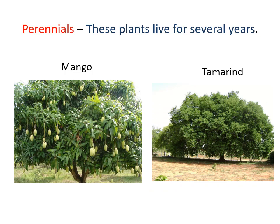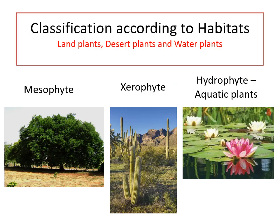Perennials are plants that live for several years. Big trees like mango and tamarind, and also shrubs like oleander and hibiscus, live for several years and bear flowers and fruits — so they are known as perennials. We will come to the next criteria — that is the habitat. We will classify plants as land plants, desert plants, and water plants. Land plants are known as mesophytes, desert plants as xerophytes, and aquatic or water plants as hydrophytes.